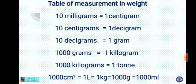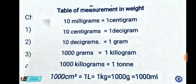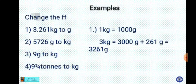The table of measurement in weight: 10 milligrams equals 1 centigram; 10 centigrams equals 1 decigram; 10 decigrams equals 1 gram; 1000 grams equals 1 kilogram; 1000 kilograms equals 1 ton. Also note: 1000 centimeter cubed equals 1 liter, which is the same as 1 kilogram, which is the same as 1000 grams, which is the same as 1000 milliliters.